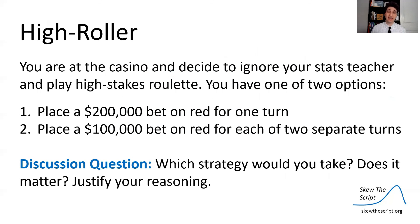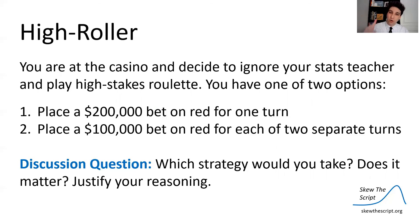Today's discussion question: you're at a casino playing high-stakes roulette and have two options — place a $200,000 bet on red for one turn, or place a $100,000 bet on red for two consecutive turns. Which strategy would you take? It doesn't matter which strategy you choose — explain your reasoning. Thank you so much, have a good one, Statisticians!